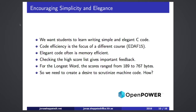How can we encourage simplicity and elegance? It turns out that elegant code is usually memory efficient as well. The scores and high score lists give students very important feedback. For instance, in the longest word assignment, scores ranged from 189 bytes to almost 800. Students have different competence levels, but they realize there is room for making the code simpler. Without the high score list and automatic grading, they don't see that — they just get marks on the code.